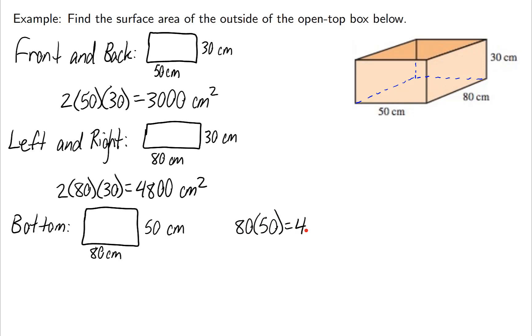which gives me 4,000 centimeters squared. Now to find the total surface area, all I need to do is add these three numbers together. 3,000 plus 4,800 plus 4,000 gives me 11,800 centimeters squared for the total surface area of this box.